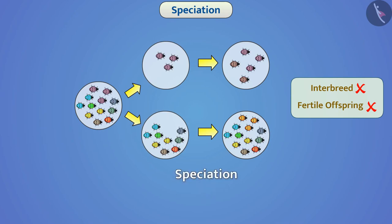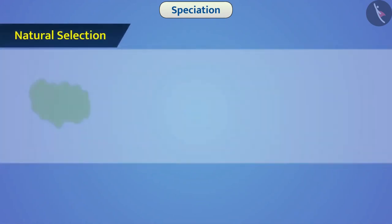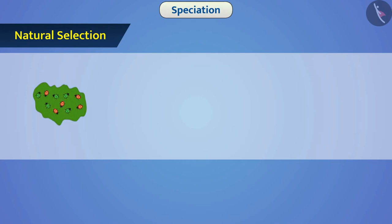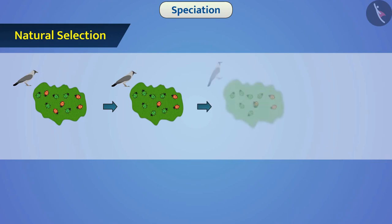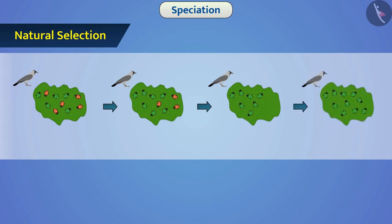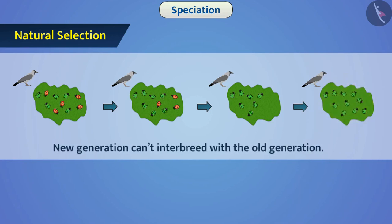Let us discuss various factors responsible for speciation. Natural selection: there are variations in the population of an organism. Many changes occur in the environment, and in such a changing environment, only those organisms survive that are well adapted. Those which do not have favourable adaptation get slowly eliminated. Those who survive transfer these beneficial traits to their offspring. Due to accumulation of such changes over generations, the population of organisms evolves. Sometimes, the new generation becomes so different that it can't interbreed with the old generation — speciation has happened.